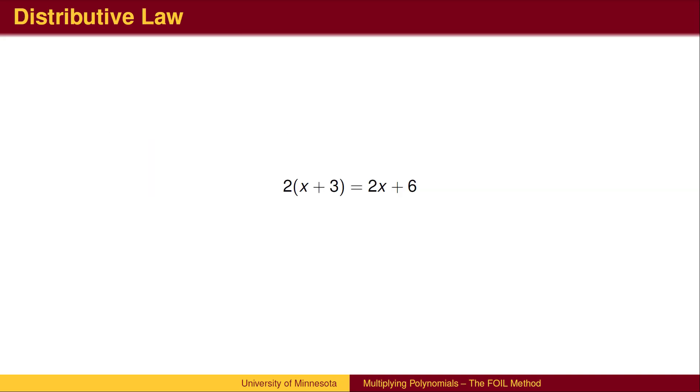Recall the distributive law. When a polynomial like x plus 3 is multiplied by a single term like 2, the 2 is multiplied to each term in the polynomial. We multiply 2 times x and then multiply 2 times 3.